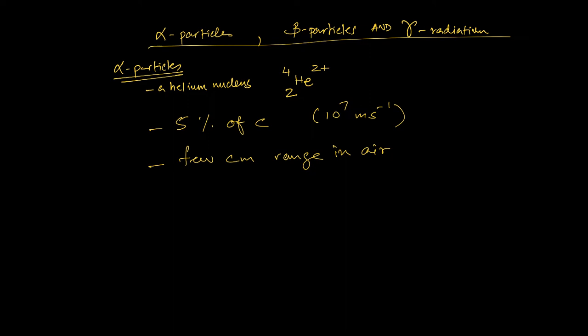Because alpha particles are charged, they can be deflected by electric and magnetic fields. The alpha particle is identical to the nucleus of a helium atom and can be written as helium-4 with a plus-two charge — though some books omit the 2+ superscript and simply write helium with four on top and two on the bottom.